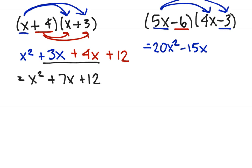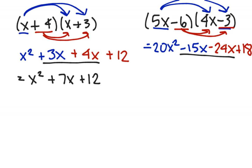Next, we are distributing not just 6 but negative 6. Negative 6 times 4x is negative 24x, and negative 6 times negative 3 is positive 18. Combining like terms, we have negative 15x and negative 24x, which combine to give 20x squared minus 39x plus 18.